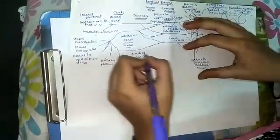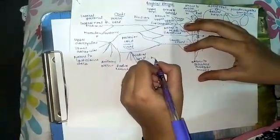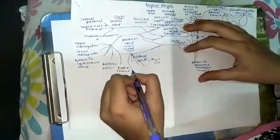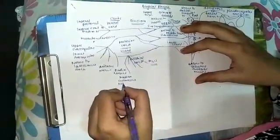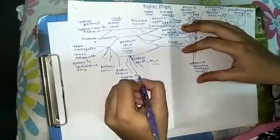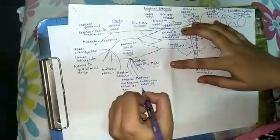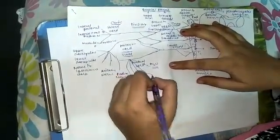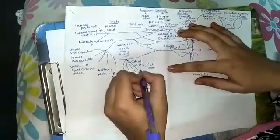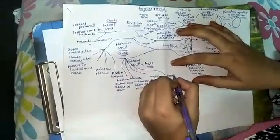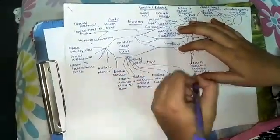The medial cord divides into five divisions, which can be remembered through the mnemonic M4U. The first M is medial cutaneous nerve of arm, the second M is medial cutaneous nerve of forearm, the third M is medial pectoral nerve — we have seen lateral pectoral nerve above — and the fourth M is the medial root of median nerve. U is nothing but the ulnar nerve.